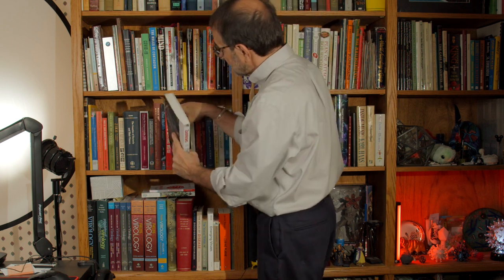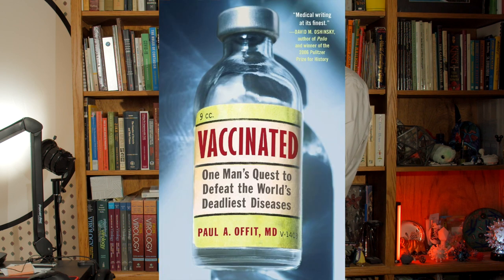Another one that was given to me, Zoonoses. This is an ASM Press book, Infectious Diseases Transmissible from Animals to Humans. This is an edited book with chapters on both bacterial and viral zoonoses. Here's another one I was given, Vaccinated, One Man's Quest to Defeat the World's Deadliest Diseases. This is mainly the story of Maurice Hilleman, who worked at Merck for many years and developed many, many human vaccines. It's again by Paul Offit.